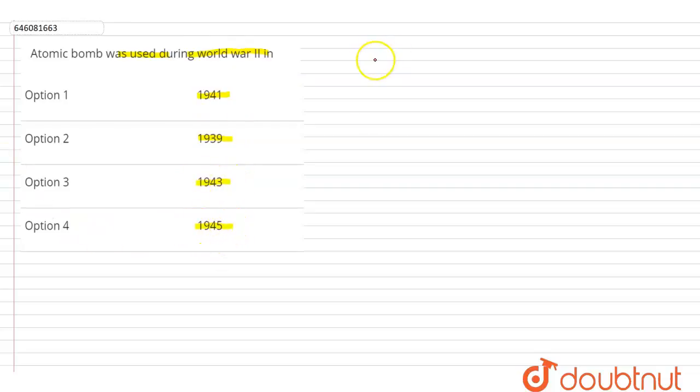So the first ever atomic bomb was detonated on Hiroshima and Nagasaki of Japan. It was the first ever atomic bomb which took millions of lives, and this horrific day was in 1945. So the answer to this question is 1945.